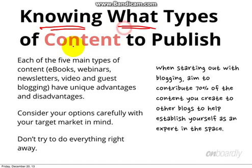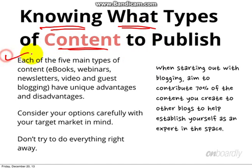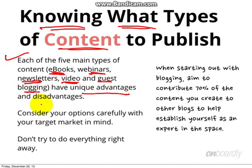The second thing is knowing what types of content to publish. There are five main types of content: ebooks, webinars, newsletters, videos, and guest blogging. Each has unique advantages and disadvantages, so consider your options carefully with your target market in mind.